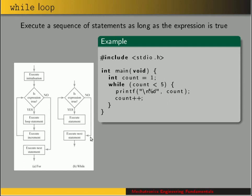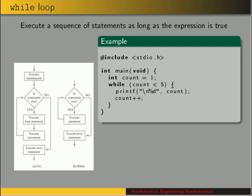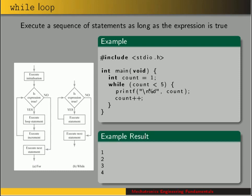A while loop doesn't have the automatic incrementing — we just have an expression we evaluate, which gives it simpler syntax. Comparing to the for loop: the while loop uses 'while count less than five', and inside we write the value and manually increment with count++. As long as count is less than five, we keep executing the block. In this example, we start count at one, so we would see one, two, three, four on the screen.